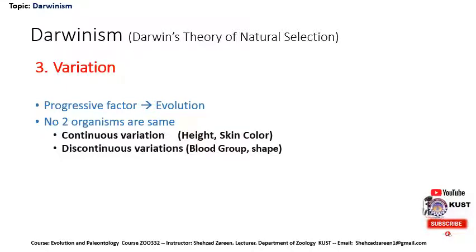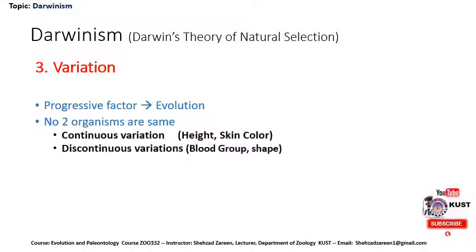Discontinuous variation refers to traits which have a discrete difference between them — there is no continuity. For example, blood group may be A, B, AB, or O. So there is a discrete difference with no continuity among all blood groups.